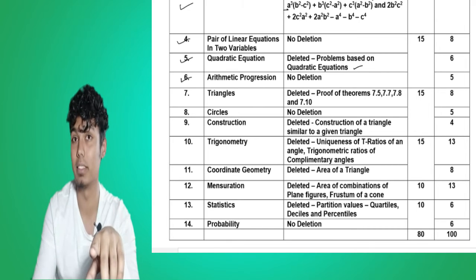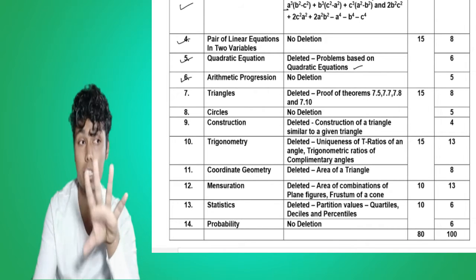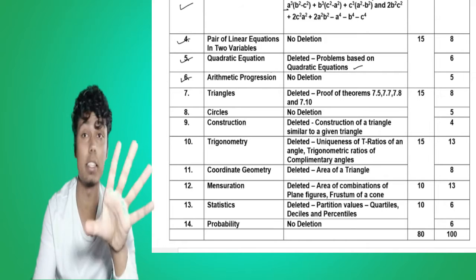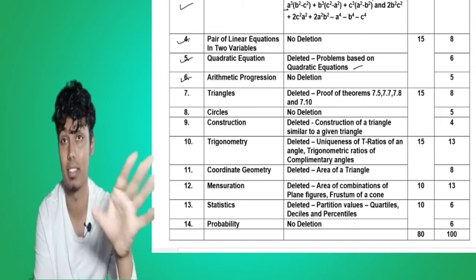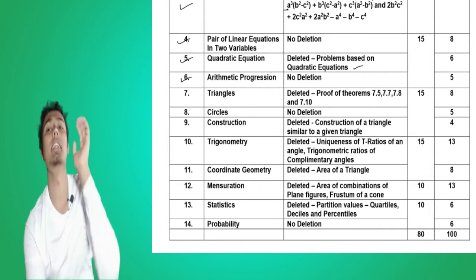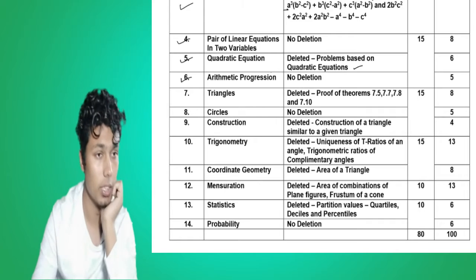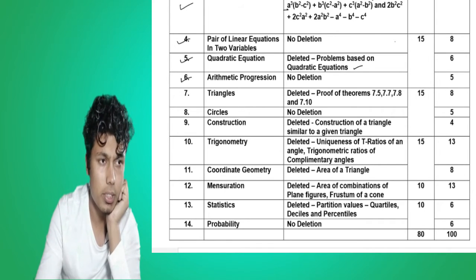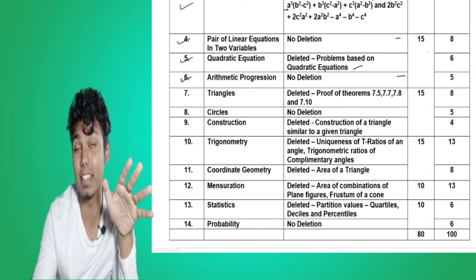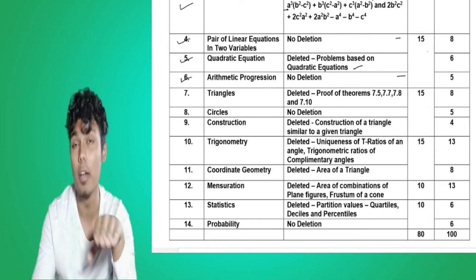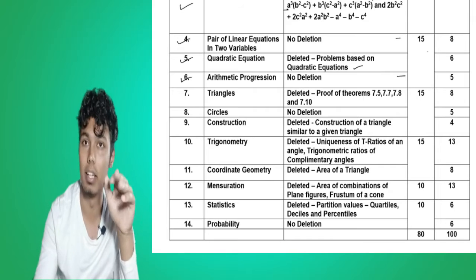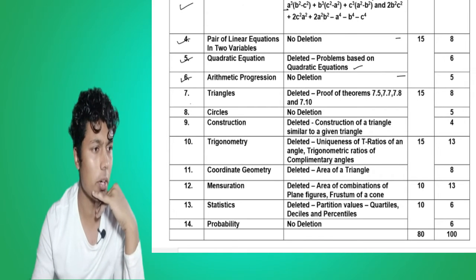So chapter number four and six are complete syllabus — all exercises will be asked, complete exercise questions from all the exercises may be asked. These three chapters also comprise fifteen marks. If you happen to study these three chapters properly you will get fifteen marks, because fifteen mark questions will be asked from these three chapters.